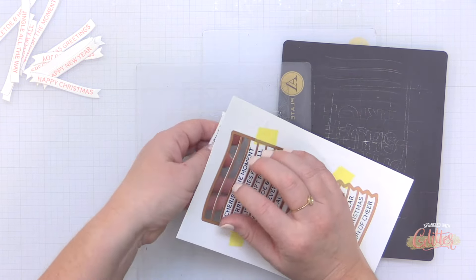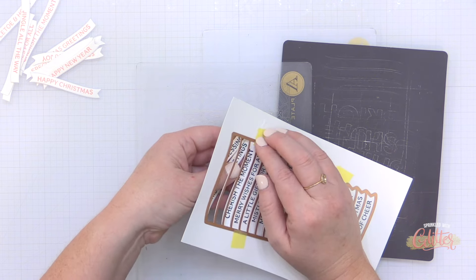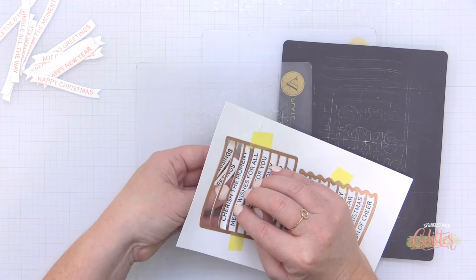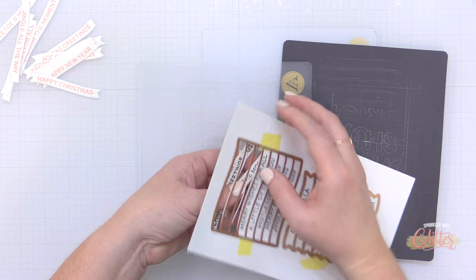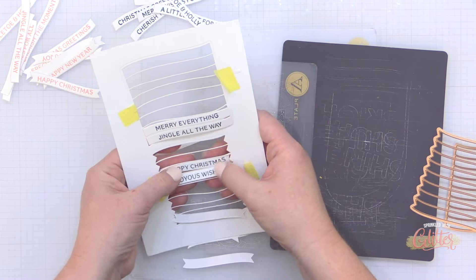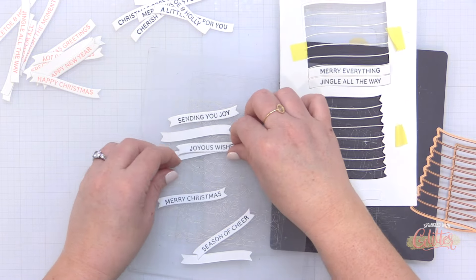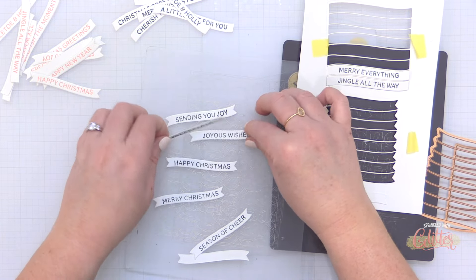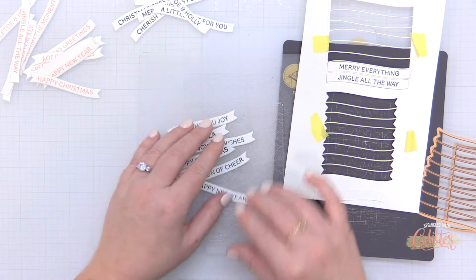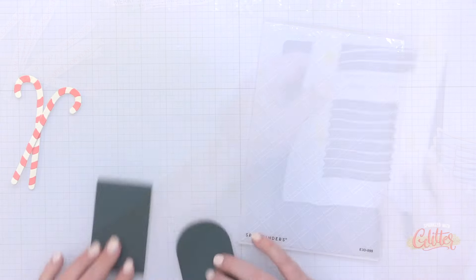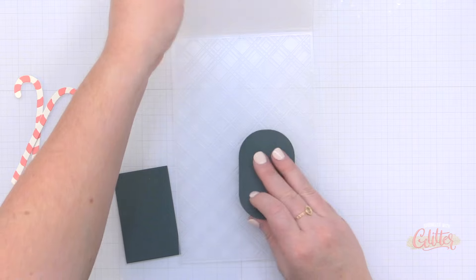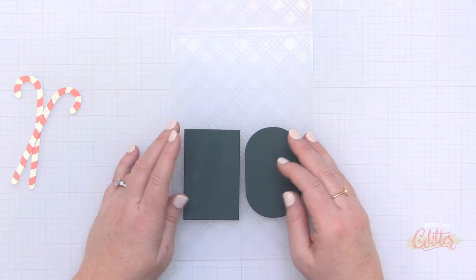So once I ran that through my die cut machine I'm going to pop out all of these sentiment banners and I have 16 different sentiment banners that I can use on holiday card projects. And I have them in both Watermelon and Rainforest so I actually created 32 sentiment strips. And I did use some of these on a previous card project that I shared last week, I'll be sure to throw a card at the end of this video so you can check out that card if you missed it.